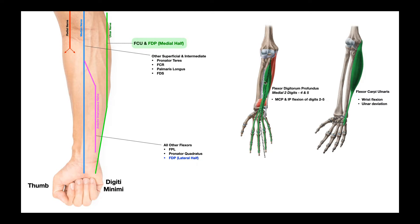Overall, flexor digitorum profundus allows flexion of digits two through five at the metacarpophalangeal and interphalangeal joints. However, because the ulnar nerve innervates the medial half of this muscle, it is mainly responsible for the flexion of digits four and five — some of three, but definitely not two. That will be discussed in a few minutes.